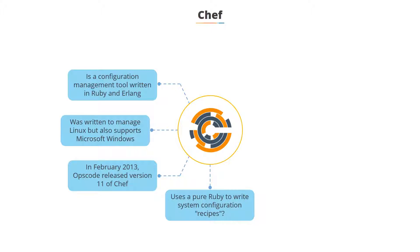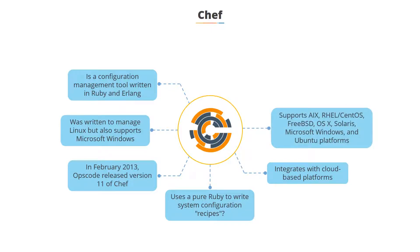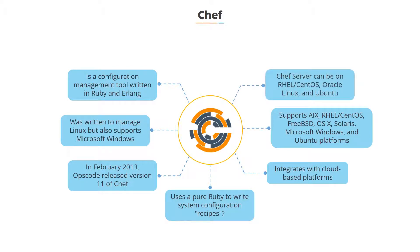Chef integrates with various cloud platforms like Amazon EC2, Google Cloud Platform, OpenStack, Microsoft Azure, and Rackspace. It also provides support for CentOS, FreeBSD, OSX, Solaris, Microsoft Windows, and various Ubuntu versions, with additional client platforms including Red Hat Linux, Debian, and Fedora.